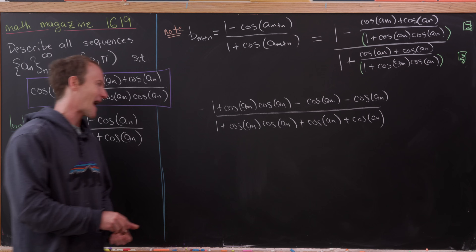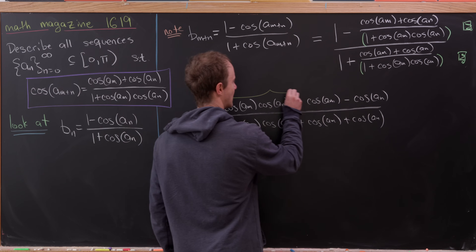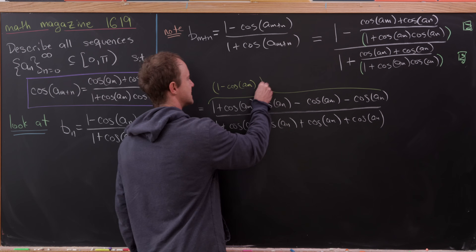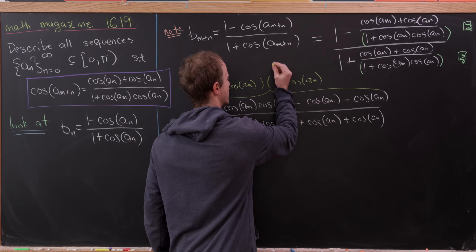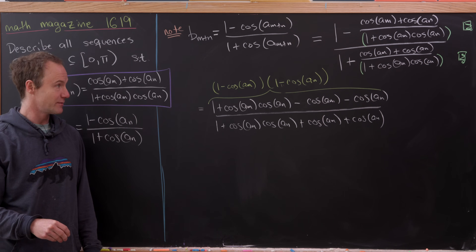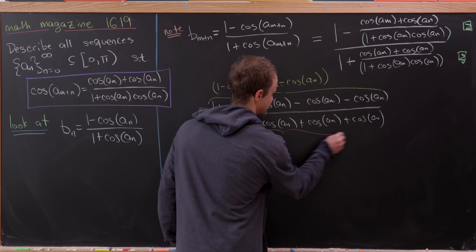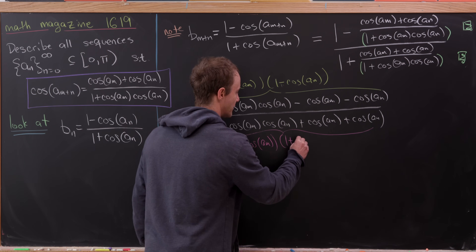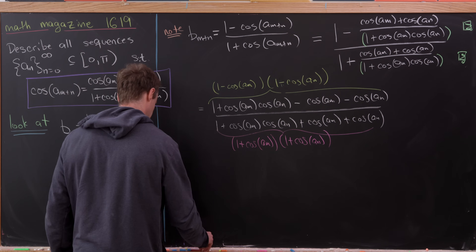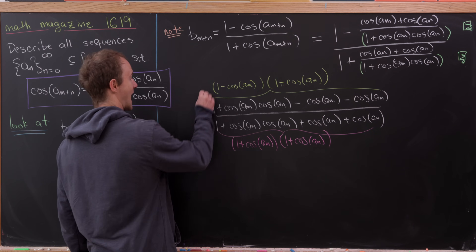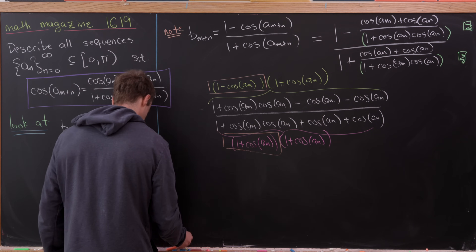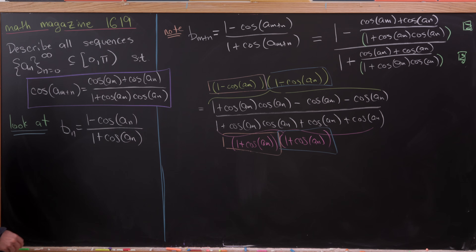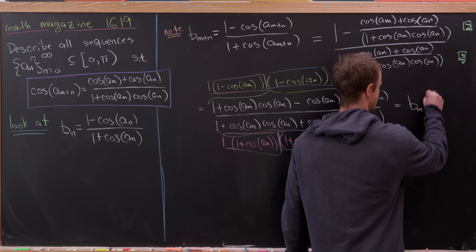Now we can factor both numerator and denominator. The numerator factors as (1 - cos(a_m))·(1 - cos(a_n)), and the denominator factors as (1 + cos(a_m))·(1 + cos(a_n)). Grouping the a_m terms over a_m terms and a_n terms over a_n terms, we get b_m times b_n. So b_{m+n} = b_m · b_n.